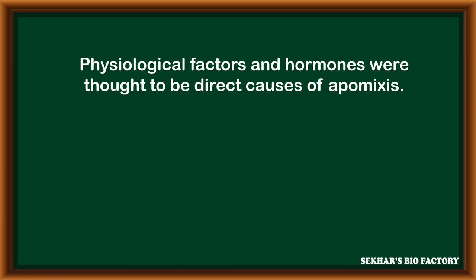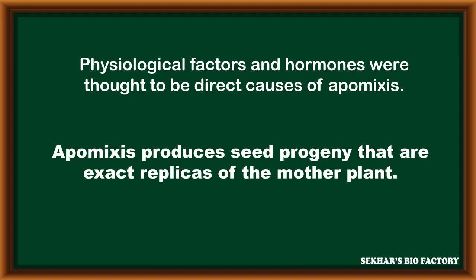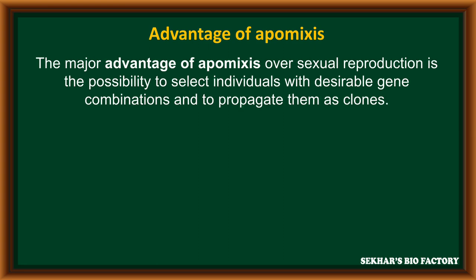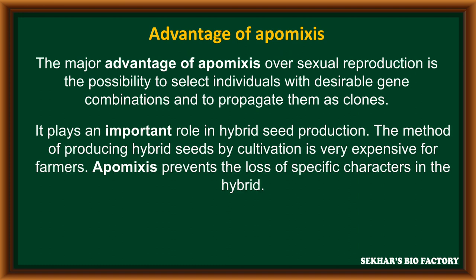Physiological factors and hormones are the main factors that can directly cause apomixis in plants. Apomixis produces seeds and progeny that are exact replicas of the mother plant. The major advantage of apomixis over sexual reproduction is that it is possible to select individuals with desirable gene combinations and propagate them as a clone. Without fertilization, all characters will be transferred into the progeny, making them clones.